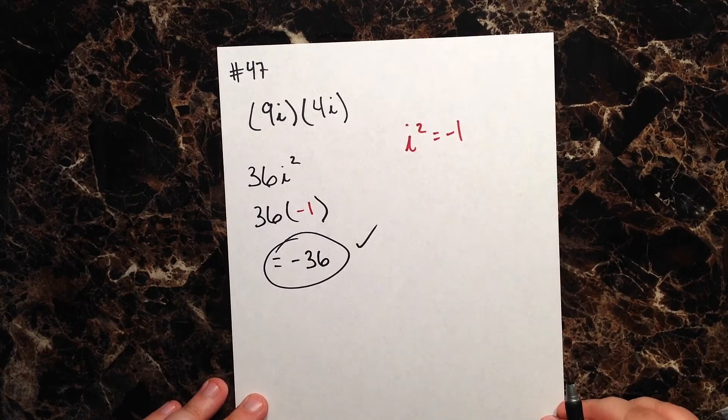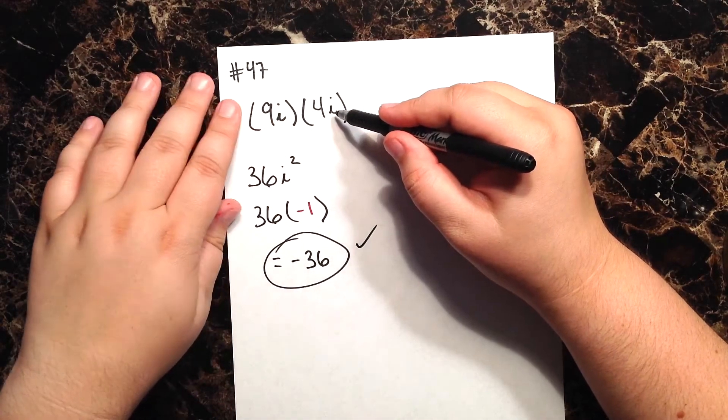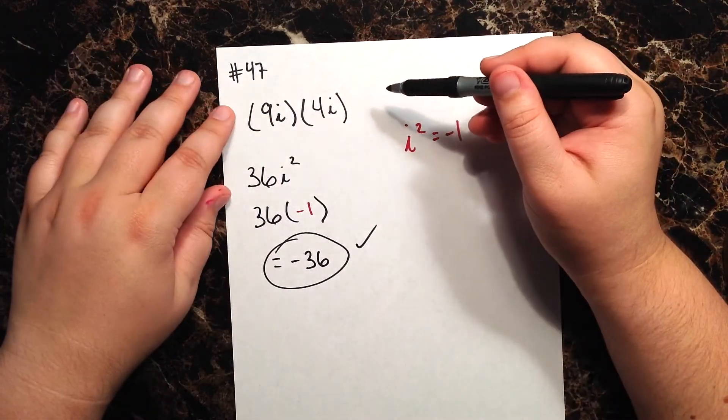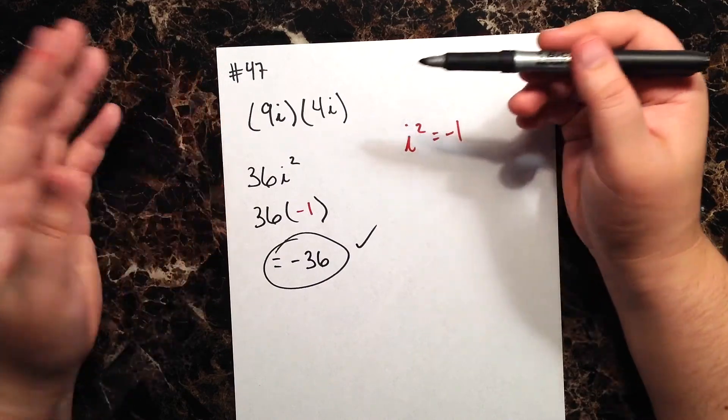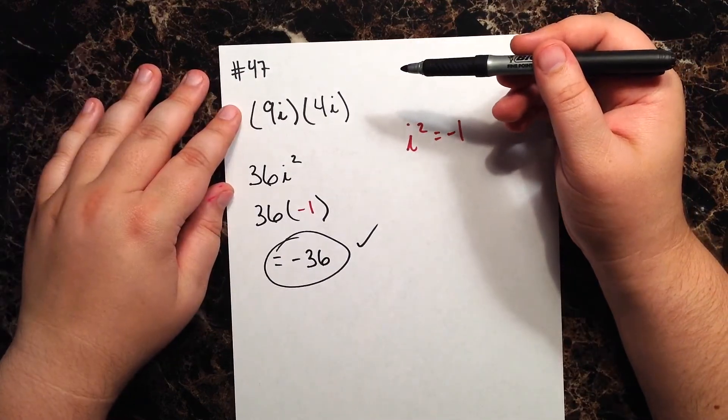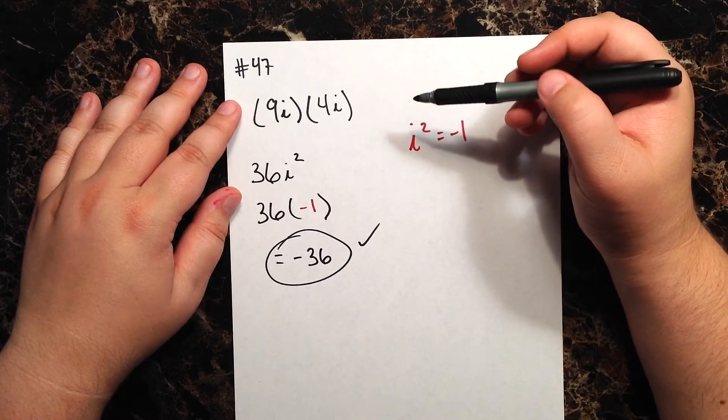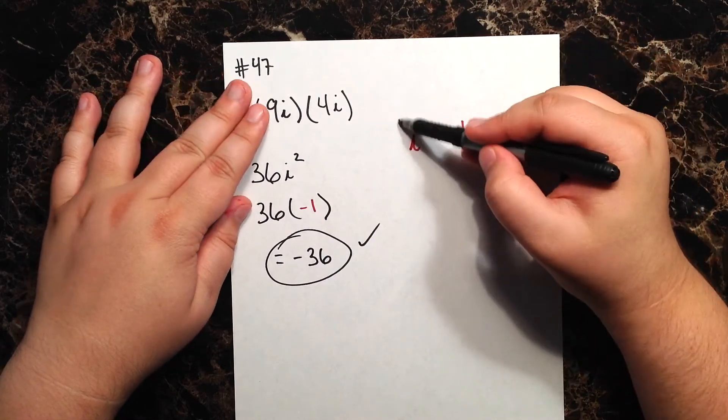All right, so nothing too complicated. Don't let these i's fool you, don't let them scare you. Treat them just like you would an x. So what would this be if this was 9x times 4x? It would be 36x squared, wouldn't it? But in this case, i squared we treat a little differently because i squared actually has a value of negative 1.